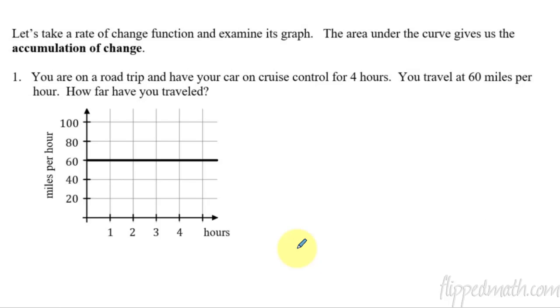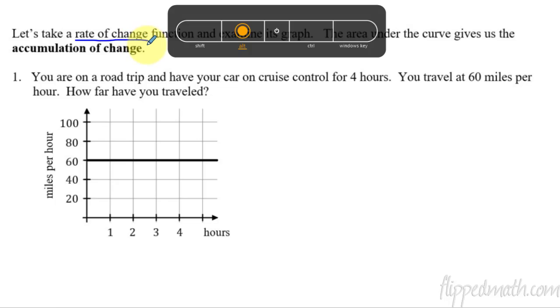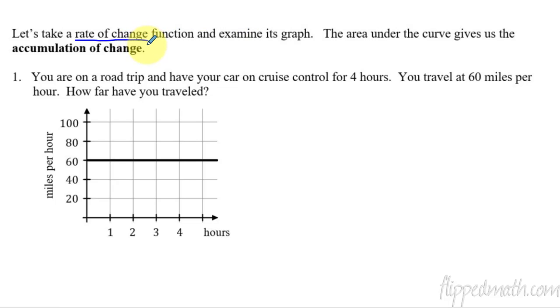Okay? So, now that you have that, we can start talking about some accumulation of rate of change. So, if you have a rate of change function, this is important. The function we're talking about must be a rate of change. Okay? So, the function itself is a rate of change. If you have something like that, then the area under the curve gives us the accumulation of change. In other words, how much things are changing by if you add up this change over time.